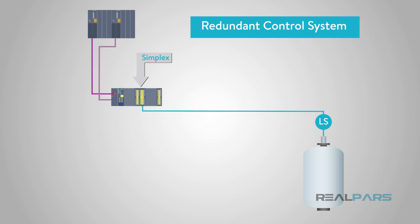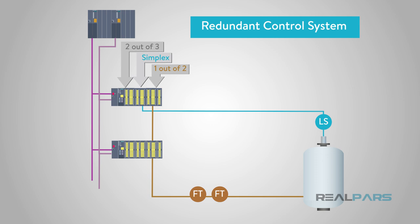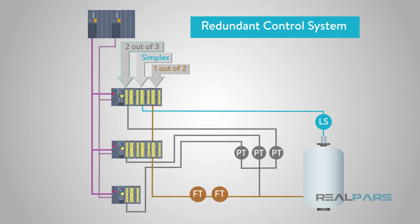Another way to reduce risk is to add redundancy. Redundancy adds cost, but generally will increase the reliability of the system and reduce risk. A 1-out-of-2 system will provide a greater level of safety response than a simplex system. A 2-out-of-3 fault-tolerant system can provide a greater level of safety response than a 1-out-of-2 system. While the 2-out-of-3 system may be more reliable, it may be installed at a much higher cost than a 1-out-of-2 system.